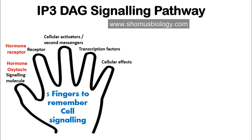The third important parameter is the cellular effectors and second messengers. In the IP3/DAG signaling pathway, the first enzyme is phospholipase C (PLC). Once activated, PLC cleaves PIP2 — phosphatidylinositol bisphosphate — into IP3 (inositol trisphosphate) plus DAG (diacylglycerol). Both IP3 and DAG then take two different routes to produce separate cellular effects.